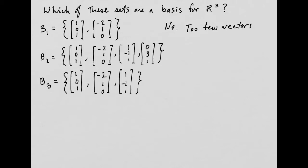And likewise, B2 has four vectors, that's too many. So again, easily we can say no, too many vectors.